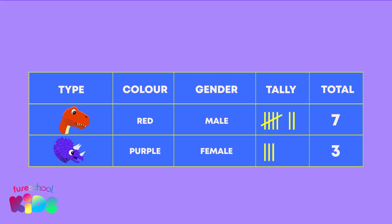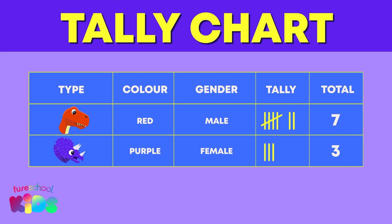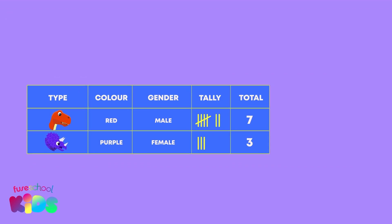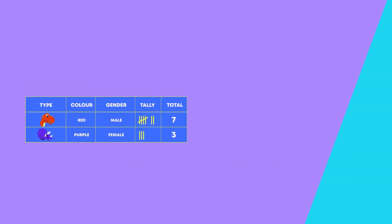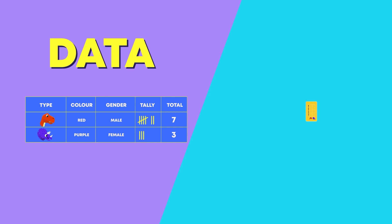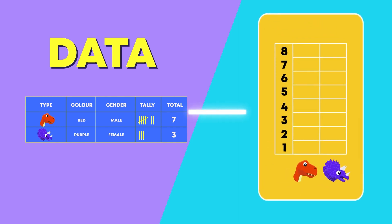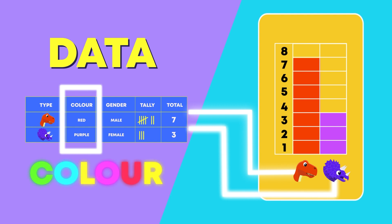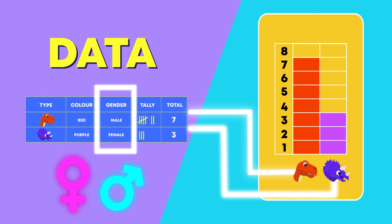This special table is called a telechart. Can you say telechart? Telecharts can be used to count and record information called data. This data or information can tell you all sorts of things that are seen. For example, the type of dinosaurs, their colour, or even their gender, if they are male or female. How cool is that?